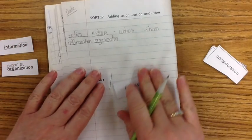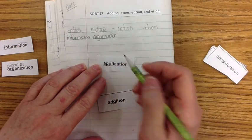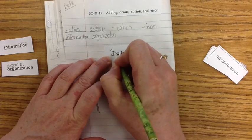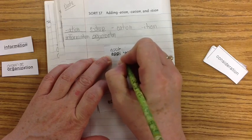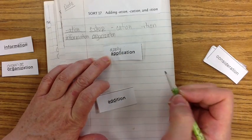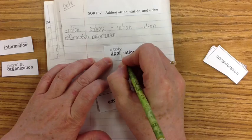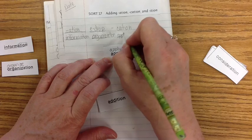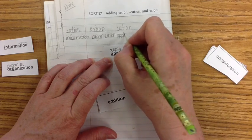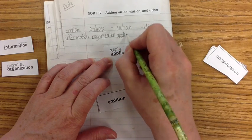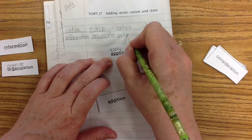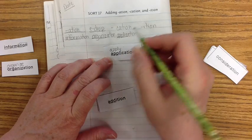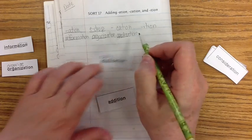Then we have application and apply, A-P-P-L. Actually apply is spelled A-P-P-L-Y. So we have to drop the Y and add I. So we do A-P-P-L, drop the Y, add the I, and the C-A-T-I-O-N. Application. So apply is your base word, but we had to change the Y to an I.